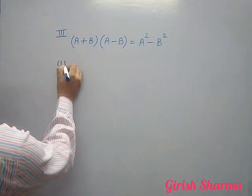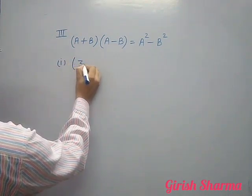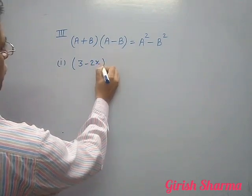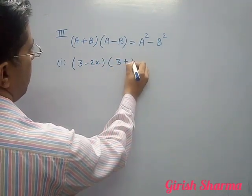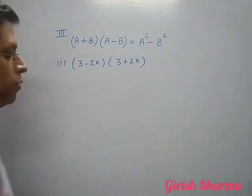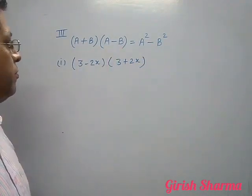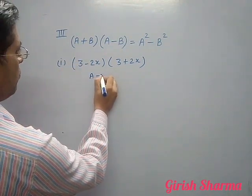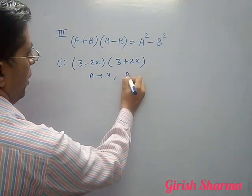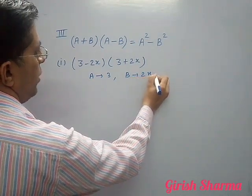Let me take the first question. See here, if I have one question: 3 plus 2x, 3 minus 2x. This is looking like this. What is A? 3. And B is what? 2x.